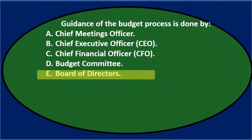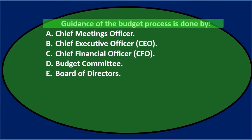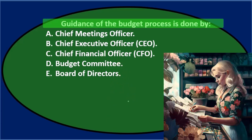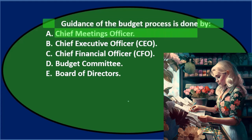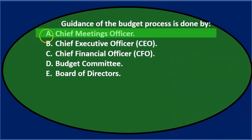Let's go through this again using the process of elimination. Guidance of the budget process — so this is the budget process. Who is responsible for the guidance of the budget process? We can say A. Chief Meetings Officer. That's a funny term. I'm not sure there's a thing called Chief Meetings Officer. It doesn't sound like a good title, so I'm not going to go with that.